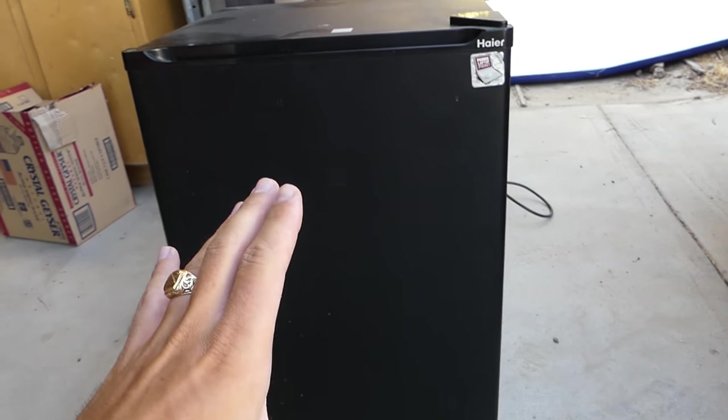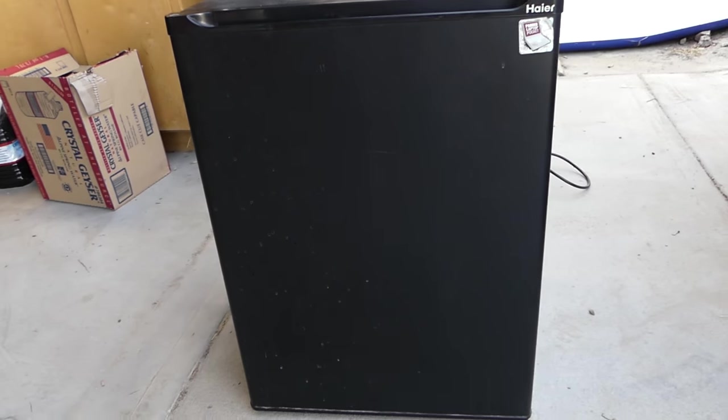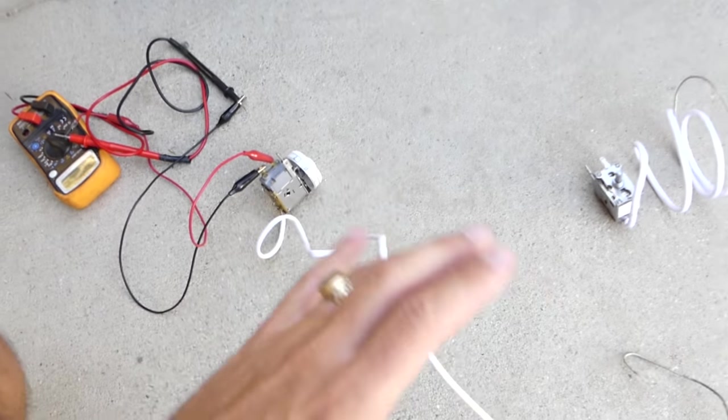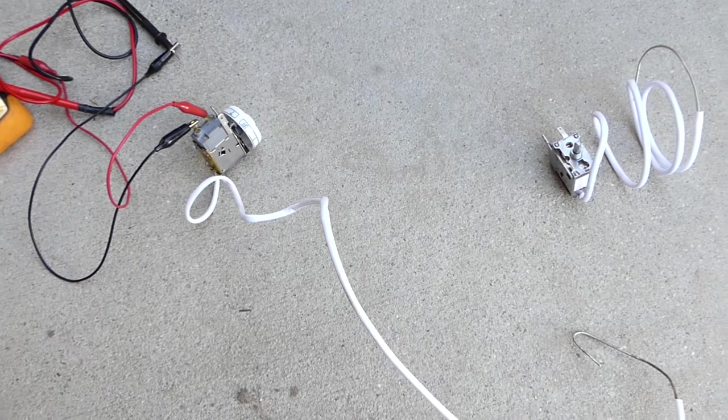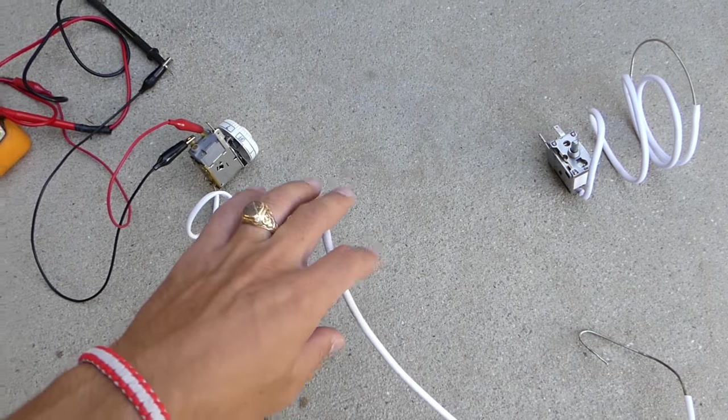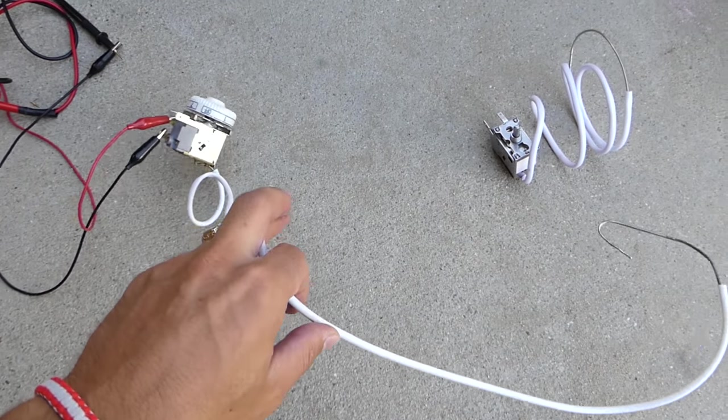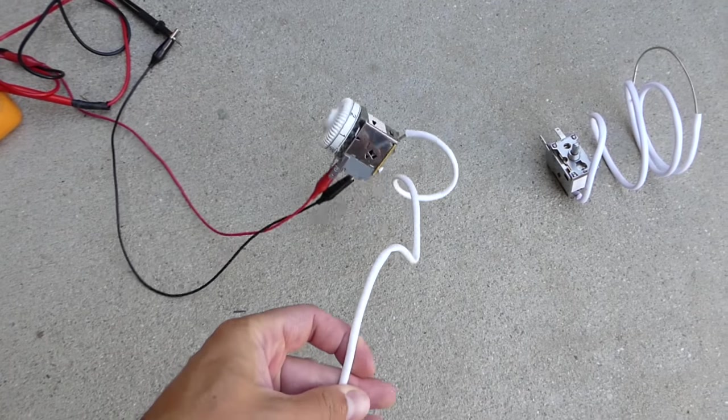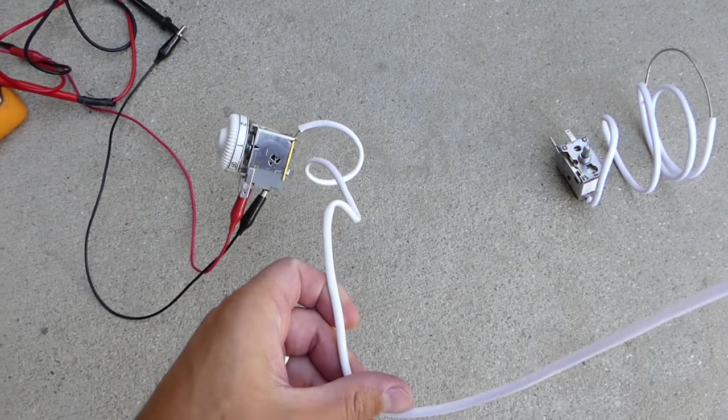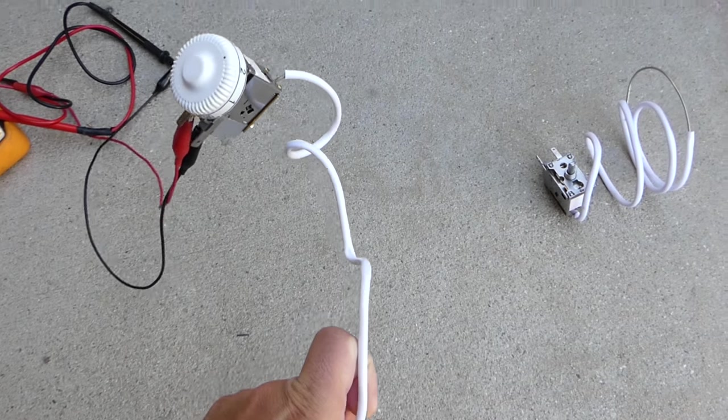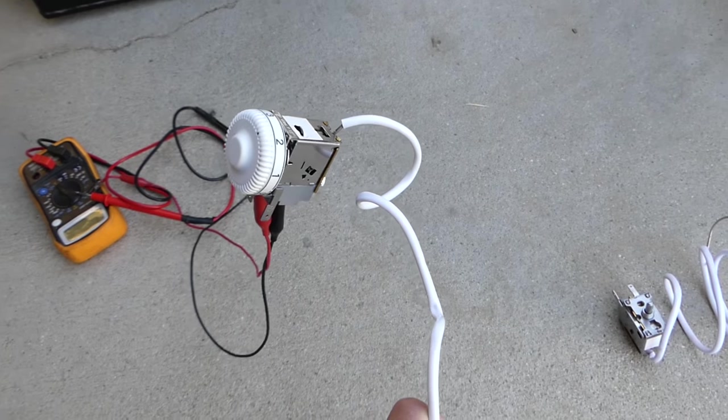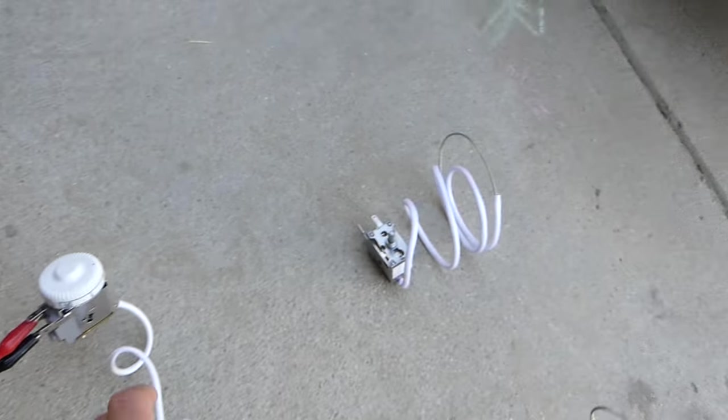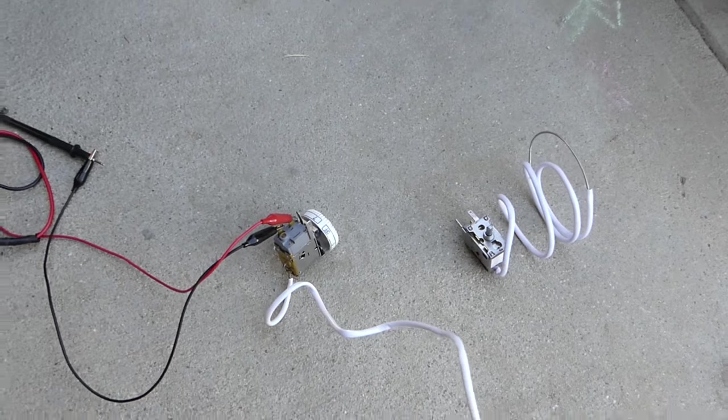I know every one of you most likely has a fridge at the house or at the shop, so I want to share some really good information with you: how to test the thermostat. Ninety percent of the time when a fridge stops working, it's because of that little thing that's very inexpensive. They usually range between ten to twenty or thirty bucks. For our model here I paid only ten dollars and eighty cents for that thermostat.